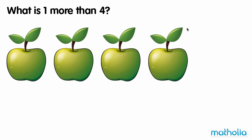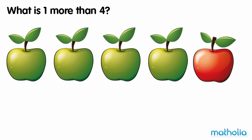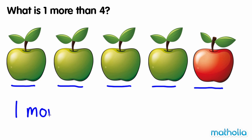What is one more than four? There are four apples in a row. Let's put one more apple in the row. Now there are one, two, three, four, five apples. One more than four is five.